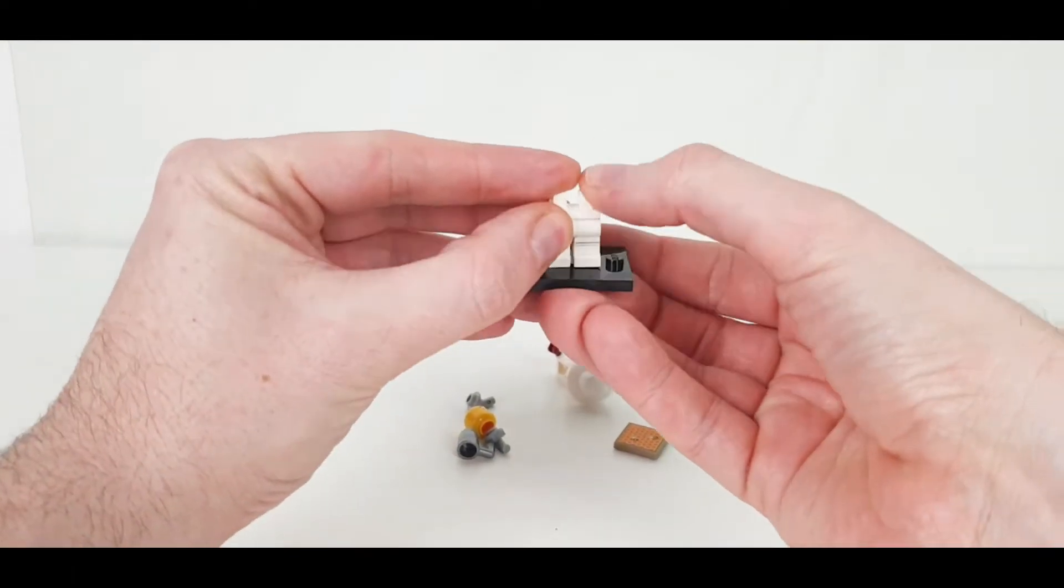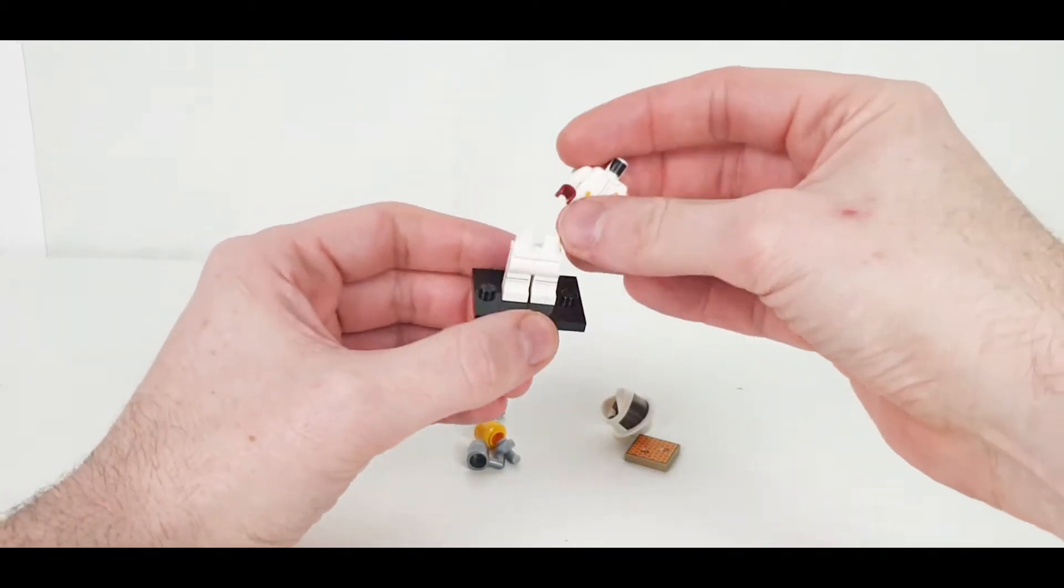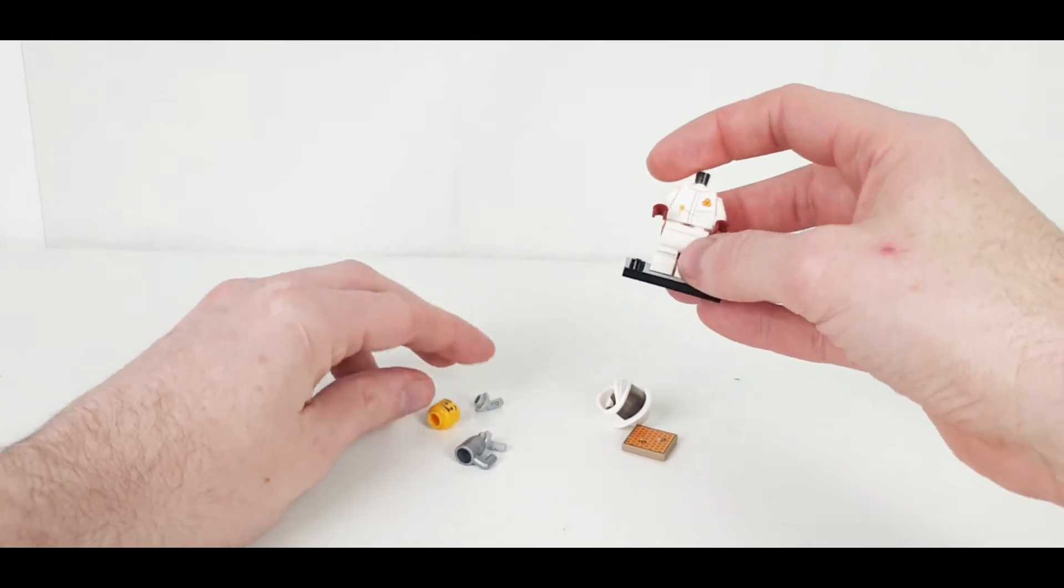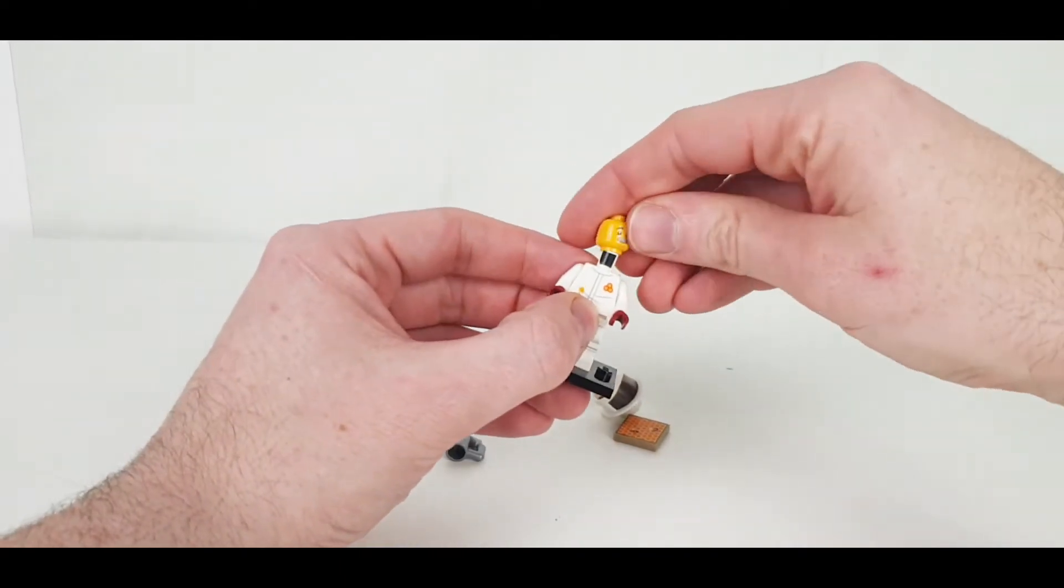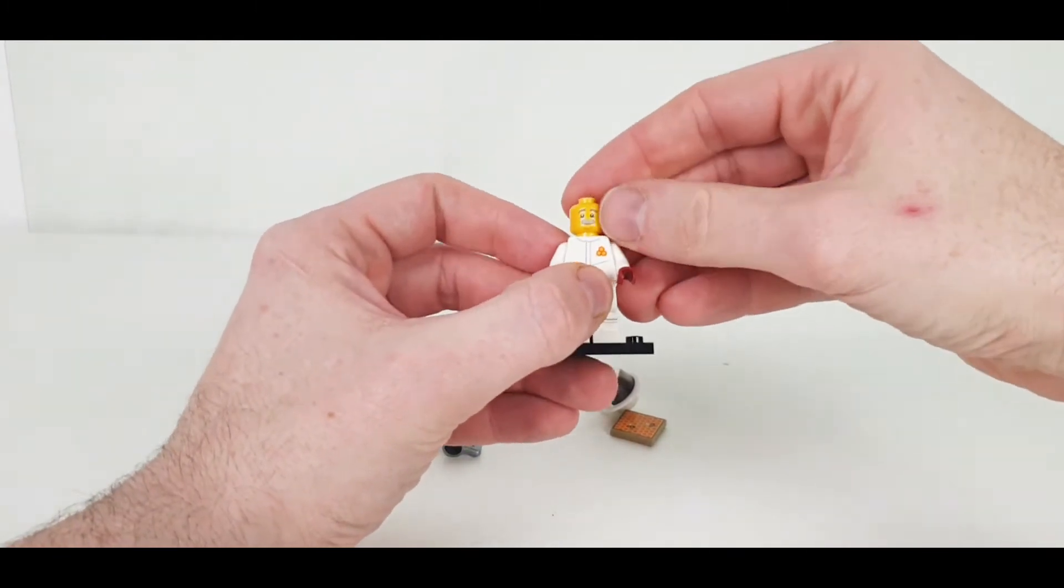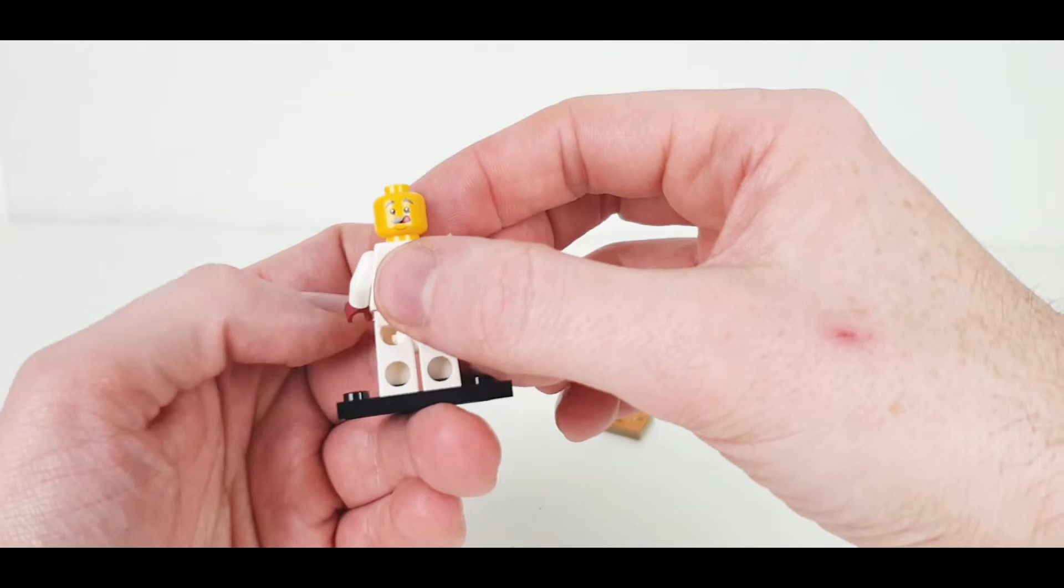We have legs. We have a body. We have a face. Oh, I love that little mustache. That is so cool. It's a little guy with a mustache. Oh, he's licking his lips.